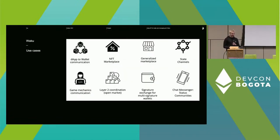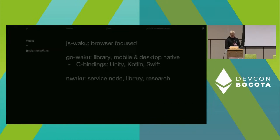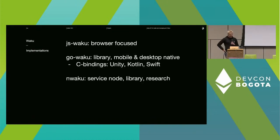Waku is decentralized, censorship-resistant, and blockchain-agnostic. Here are some example use cases: Status is using it for its chat functionality, WalletConnect is partly using it for session management, Railgun for its relay network, and you can use it for things like multi-sig coordination with Gnosis Safe. There are currently three main implementations: js-waku for browsers, go-waku which is optimized for mobile and desktop and has bindings for Kotlin and Swift, and Waku in Nim which is the main service node where all the research is happening. There's also an experimental version in Rust.